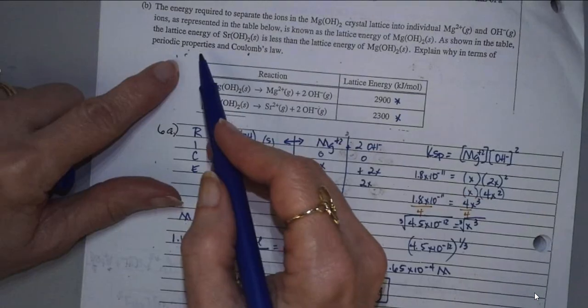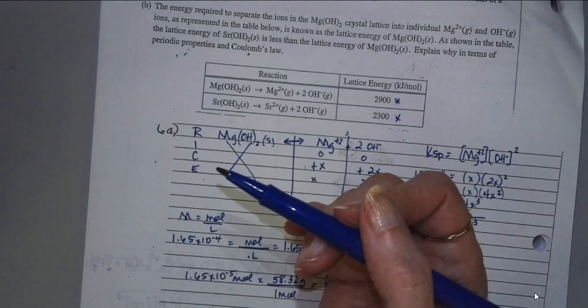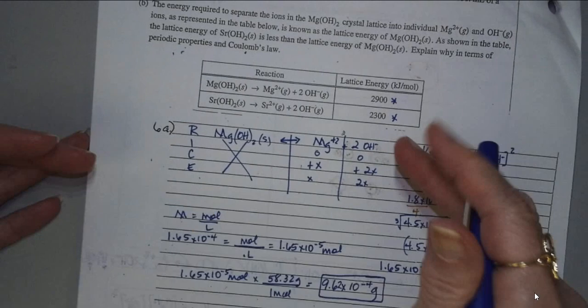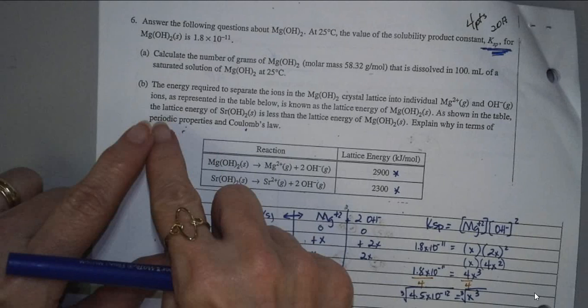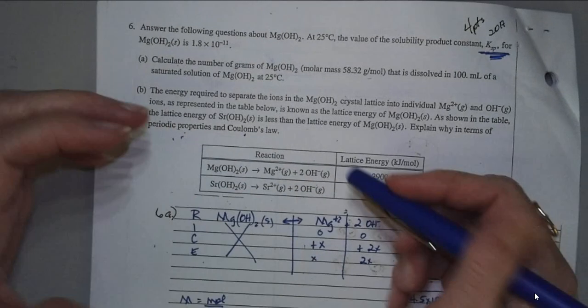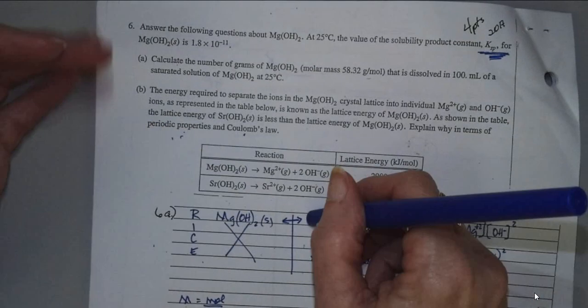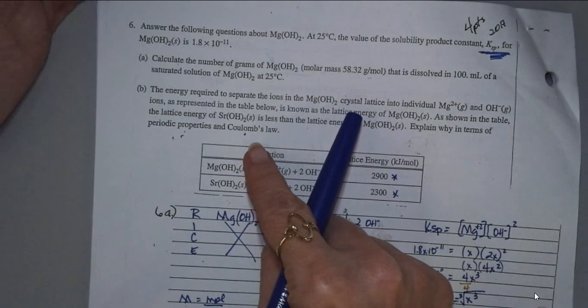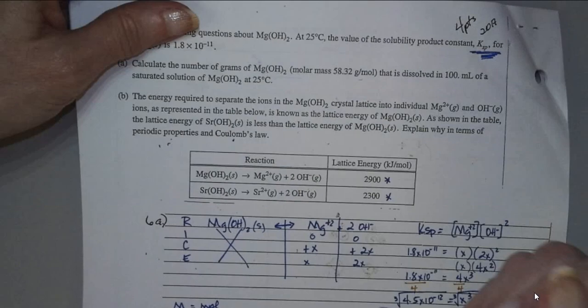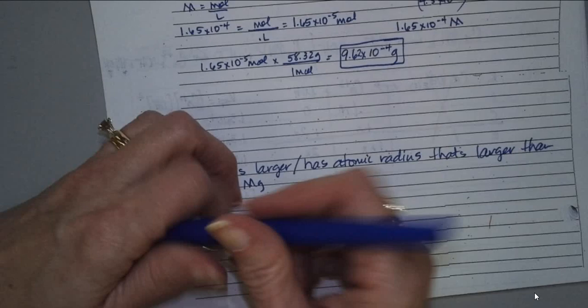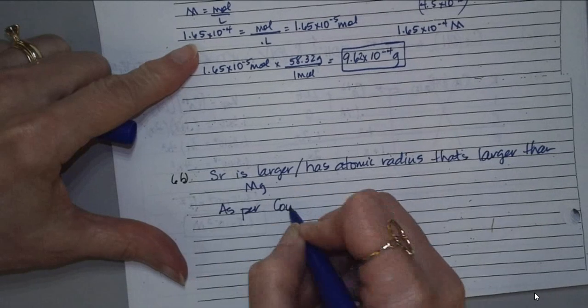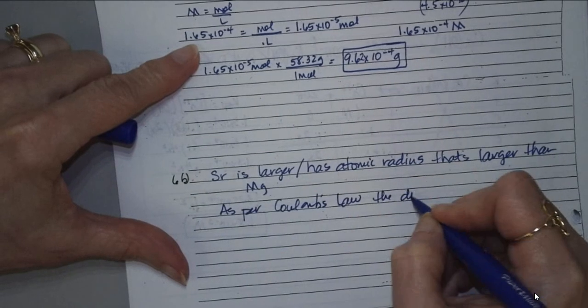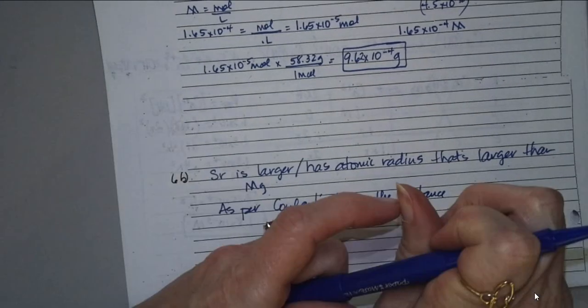But that's just part of it. So, they're doing two pieces here. Periodic properties, for one, they're asking why is magnesium hydroxide more difficult to pull apart than the strontium. And I think that's where the Coulomb's law is. So, the first thing that plays into that with Coulomb's law is the size, how far are they apart. So, the magnesium is smaller, or the strontium is larger. And as per Coulomb's law, the distance between the charges, the greater the distance between the charges, the less the force of attraction.